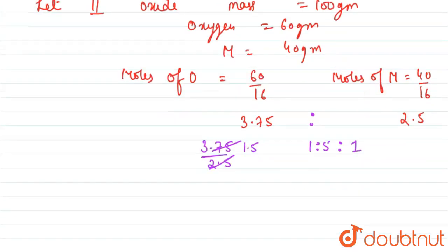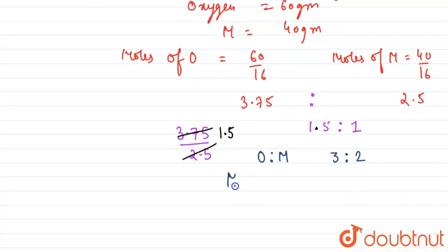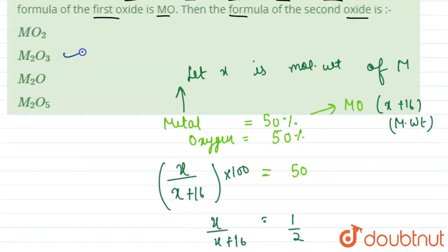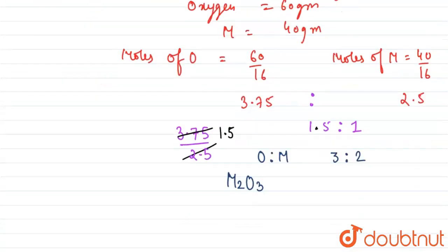When we multiply both sides by 2, we will get—this is 1.5 is to 1, and if we multiply by 2 on both sides, we will get the ratio of oxygen to the metal as 3 is to 2. So that means our formula for oxide is M2O3. This is our formula of oxide that matches with option number B. So our answer for the formula of oxide is option number B, M2O3.